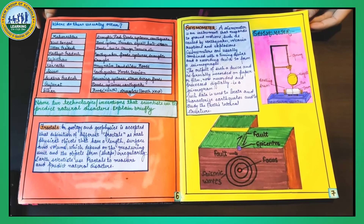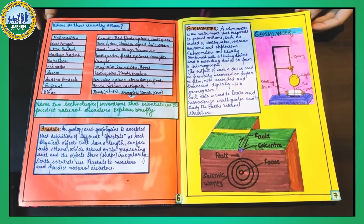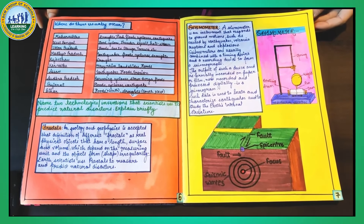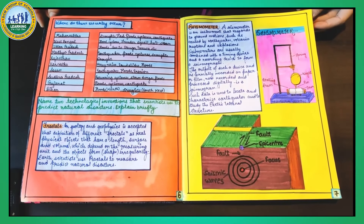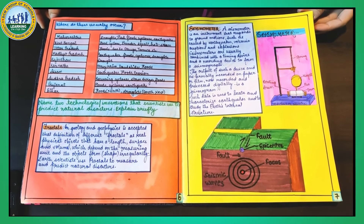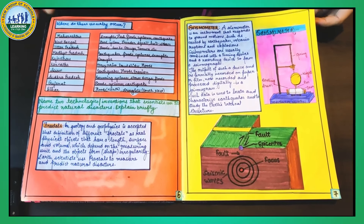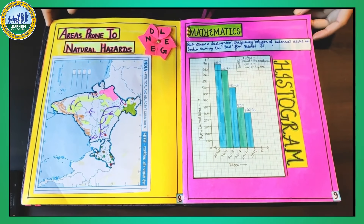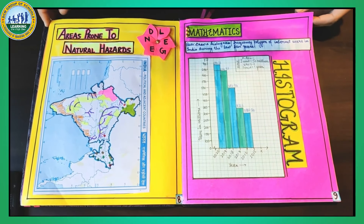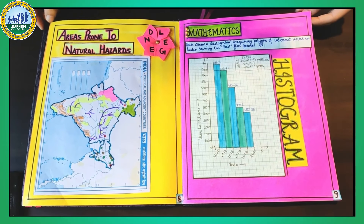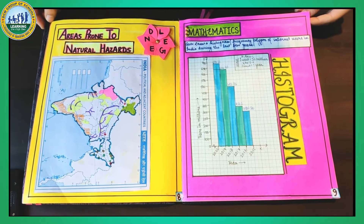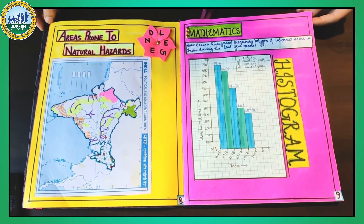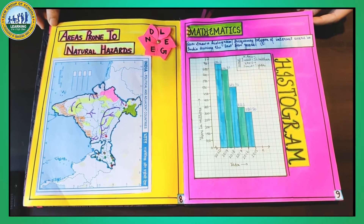The two technologies that can help us in discovering and predicting natural disasters are fractals and seismometers. This map shows how different natural disasters occur in different countries depending on their locations.